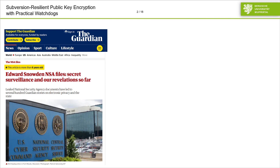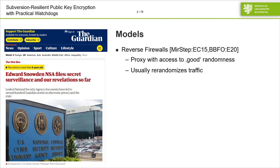One possible countermeasure are the so-called reverse firewalls, introduced by Mironov and Steven Davidovits at ASIACRYPT 2015. A reverse firewall is basically a proxy outside of the corrupted machine with access to good randomness. This machine then usually re-randomizes the traffic in order to remove any possible biases embedded in, for instance, signatures.